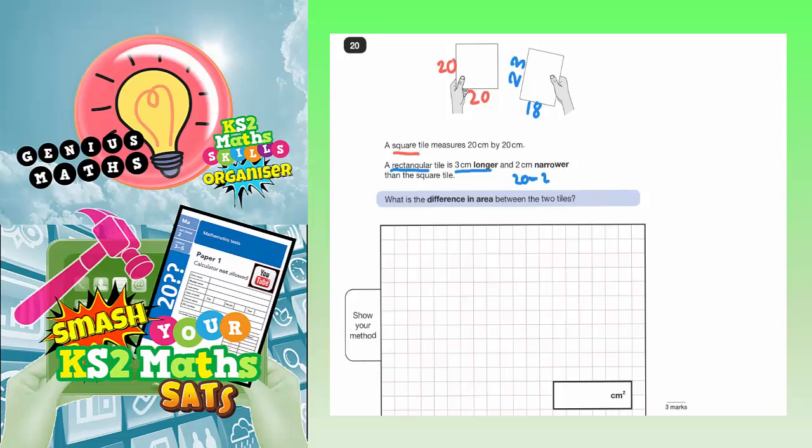Now remember with a square or a rectangle the area is basically length times width, L times W. So that's what we need to do for both the square and the rectangle. So let's do it for the square first.